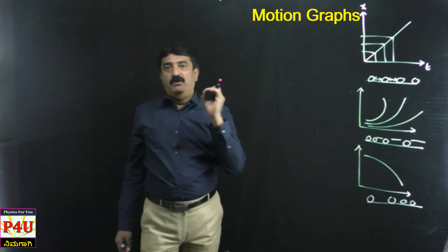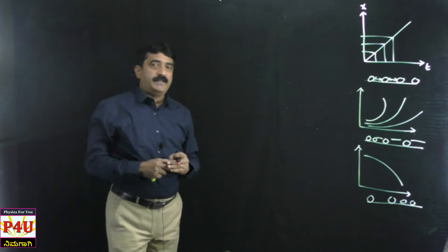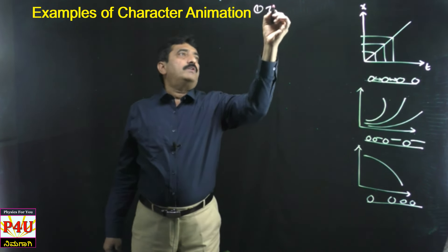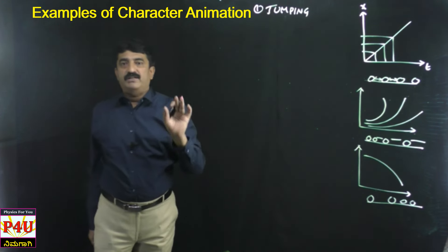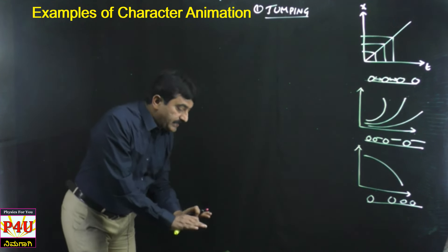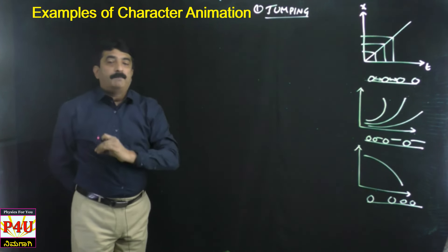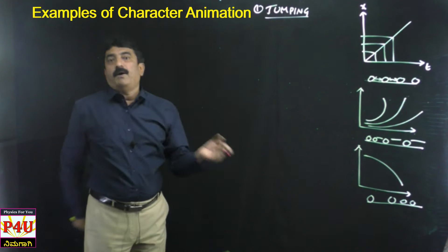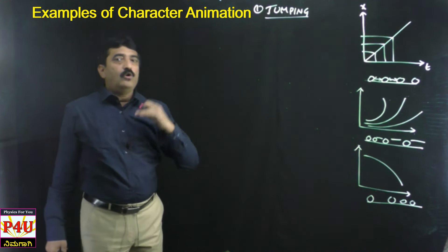Now I move on to the last part of this chapter: examples for character animation. I'll take two examples as per the syllabus. The first one is the jumping process. Jumping and walking are two commonly discussed character animation processes. Jumping is nothing but a person starting from the lowest position, taking off, and then moving in a particular path. That path is the path of action.